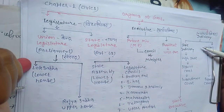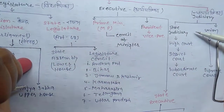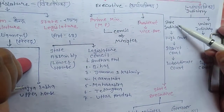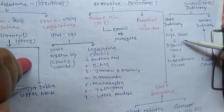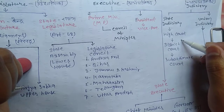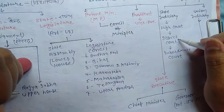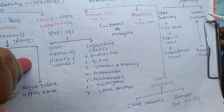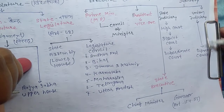Now let's see Judiciary. There are two parts: Union Judiciary and State Judiciary. State Judiciary means subordinate court, district court, and high court. If the district court is not sufficient, then we go to the high court. Union Judiciary means the Supreme Court, which is the biggest court, located in Delhi.